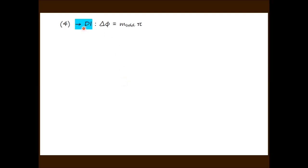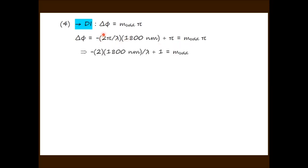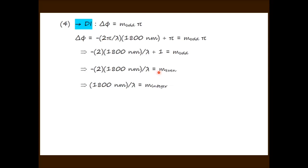We then find the condition for which we have destructive interference. We write down the general equation: the overall phase difference must be an odd multiple of pi. Substituting from our previous line and removing the common factor pi, then subtracting 1 from both sides — converting the odd integer to an even integer — and then dividing both sides by negative 2, we are left with the condition that lambda equals 1800 nanometers divided by any integer M.